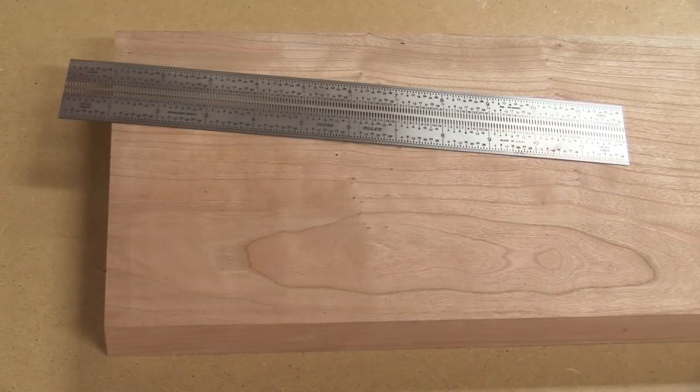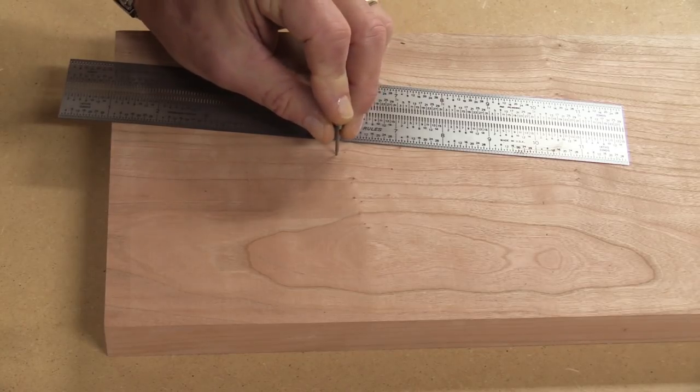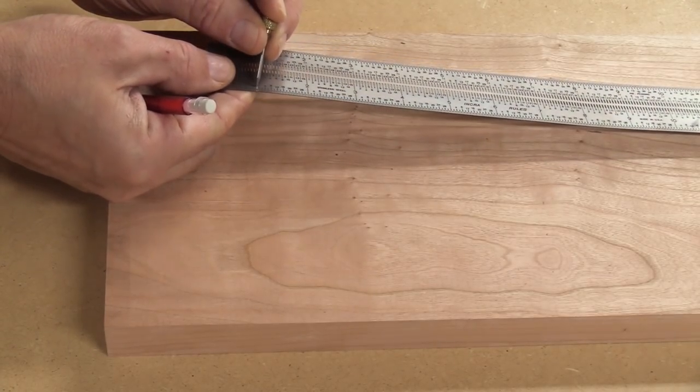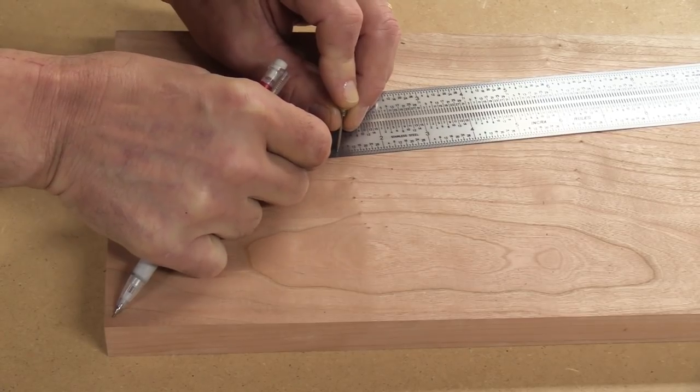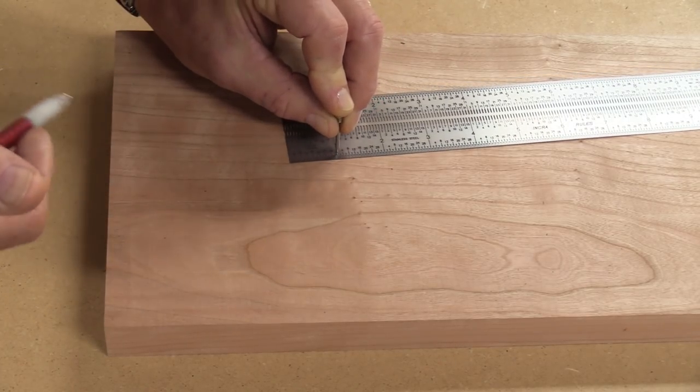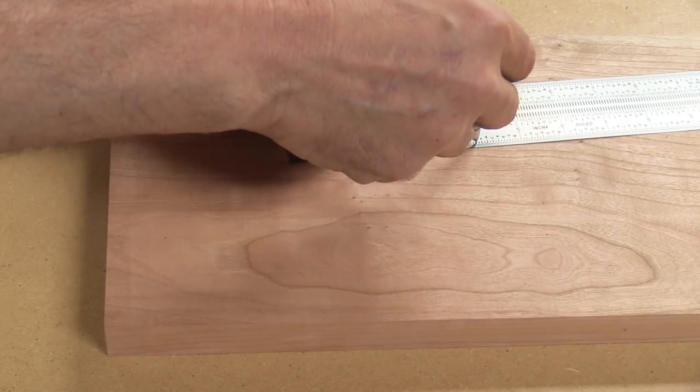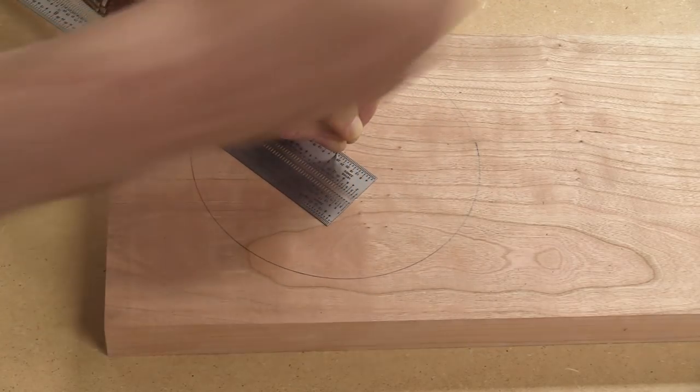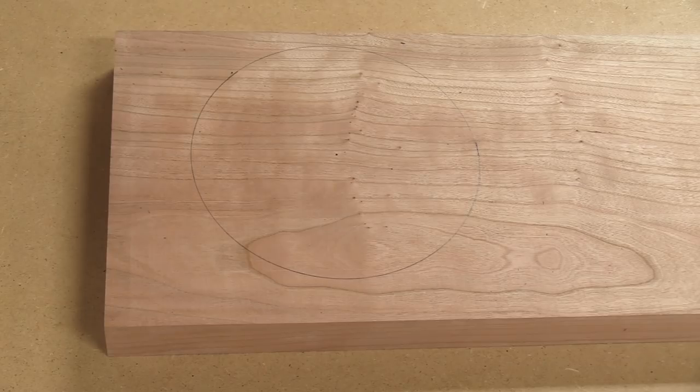Now this can also be used as a very effective compass. I've just made a mark right here, which is the center of my circle. Let's say I wanted to make a 6 inch diameter circle. I'm going to put my tool in the 1 inch spot, drop it into that hole, go over here to the number 4 because I'm an inch up, and draw the circle out. And there you have it, a perfect 6 inch diameter circle.